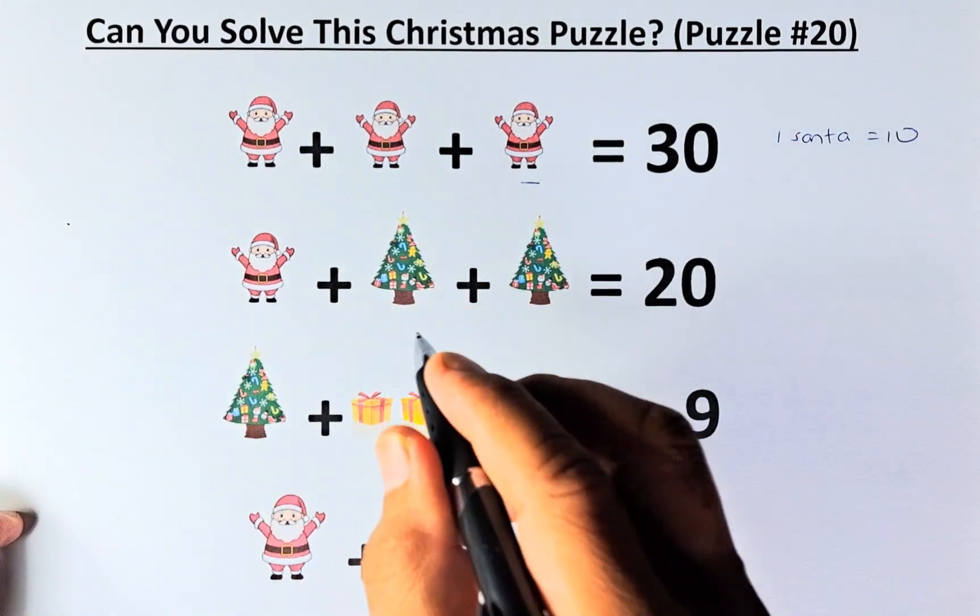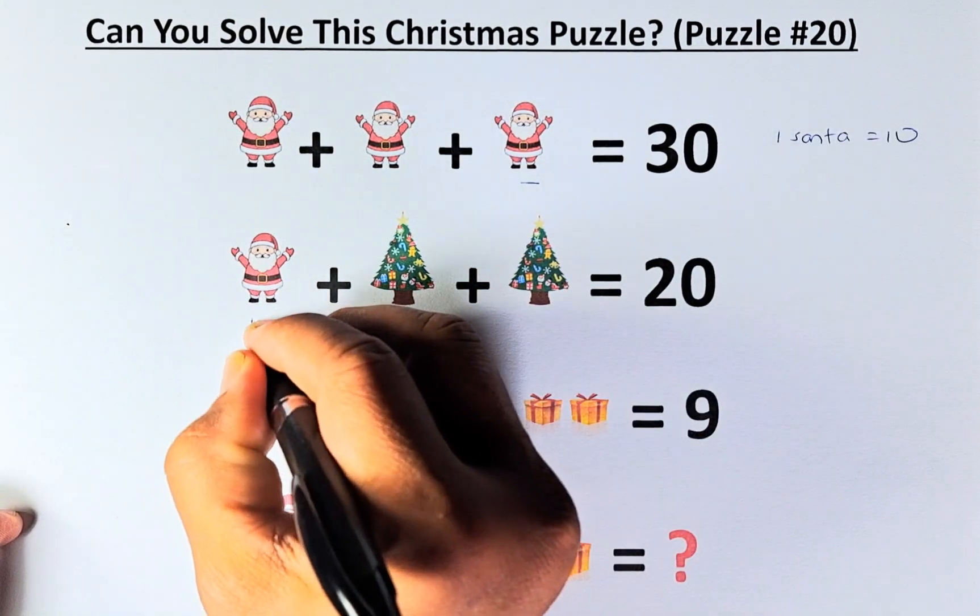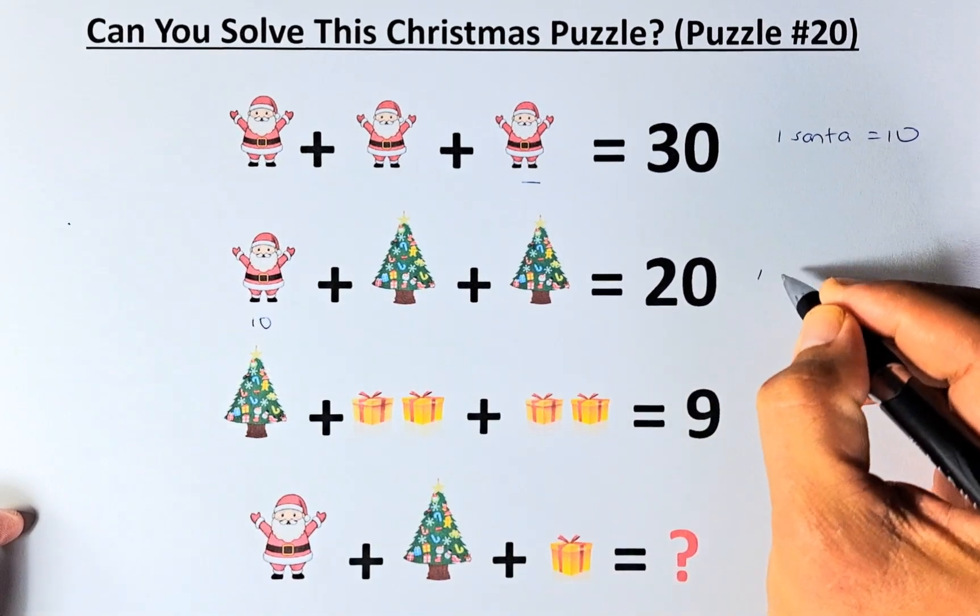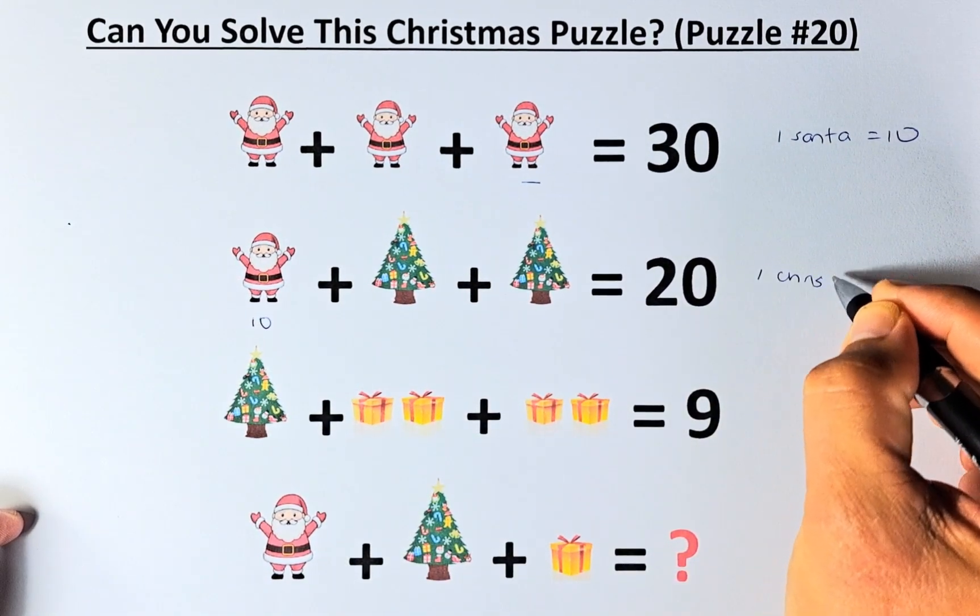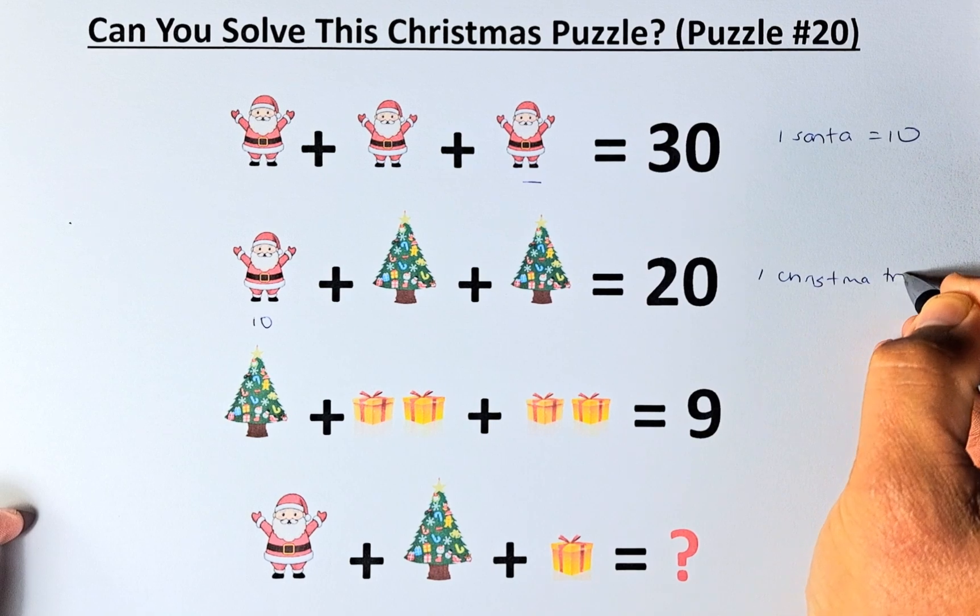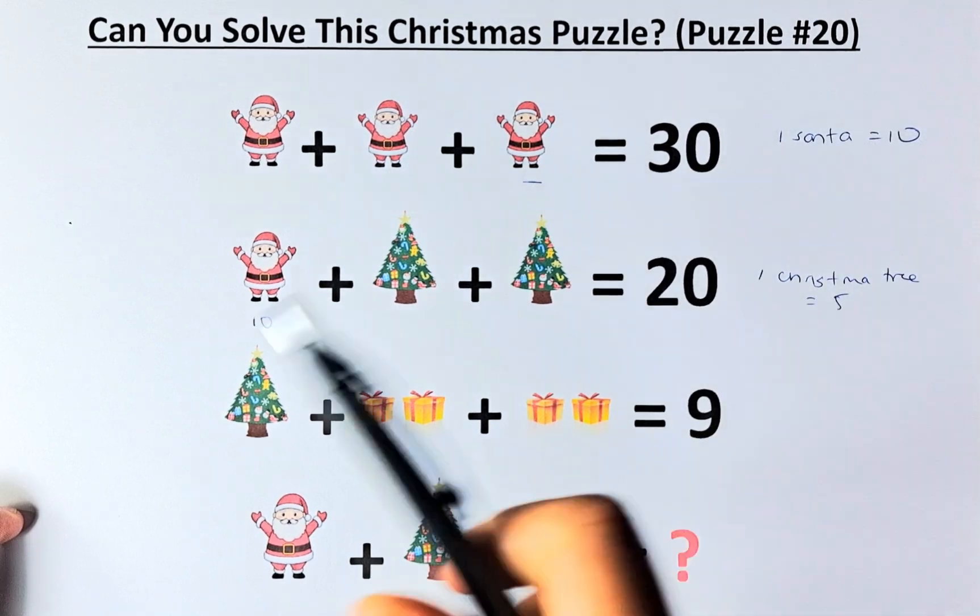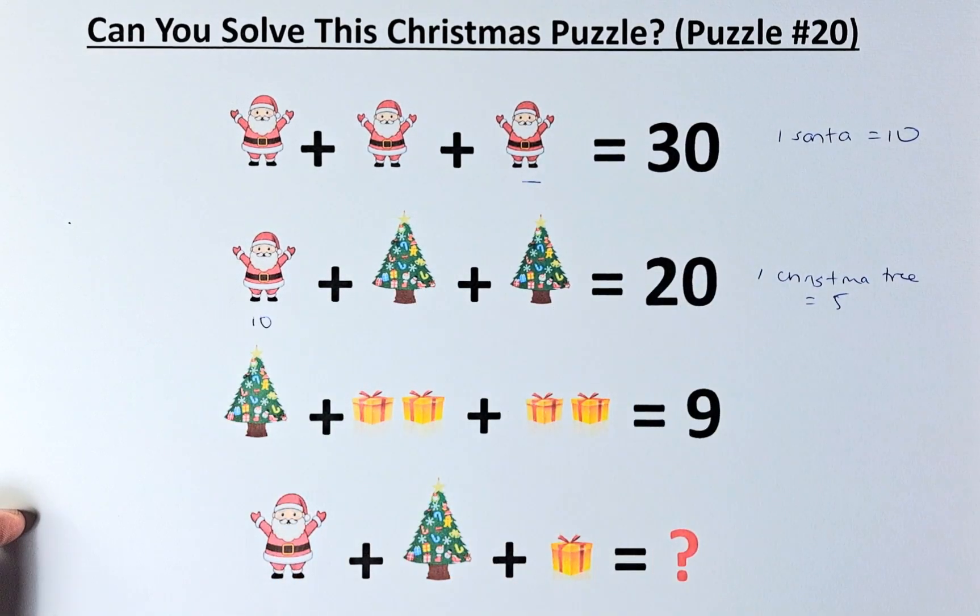If Santa Claus plus 2 Christmas trees equals 20, and Santa is 10, then 1 Christmas tree equals 5. So 10 plus 5 plus 5 equals 20.